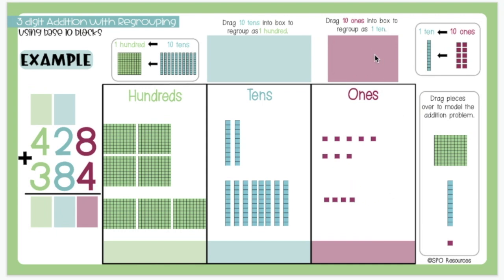So I will need to move 10 ones into the box and regroup them as 1 ten. I will start by moving my 8 ones up and then I will add 2 more ones to move up. These 10 ones are regrouped as 1 ten, so I will move an extra ten into my tens place. I now have 2 ones in my ones place.